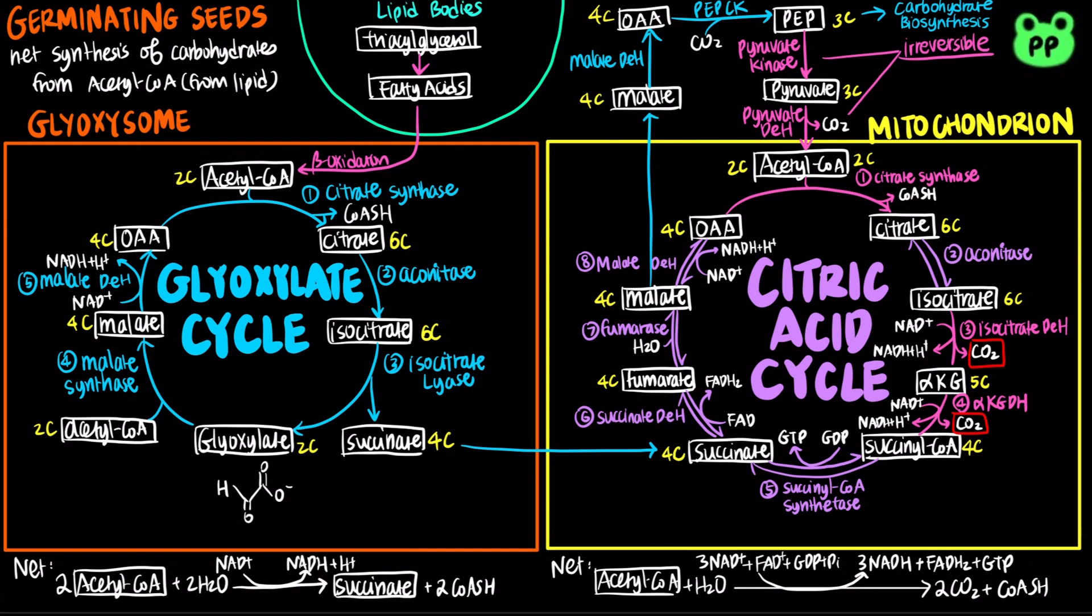Glyoxylate is a net anabolic pathway that is used for net synthesis of carbohydrates from lipids, whereas citric acid cycle is an amphibolic pathway that produces three NADH and one FADH2 for oxidative phosphorylation, as well as one GTP. Intermediates of citric acid cycle can also serve as precursors to amino acid biosynthesis.